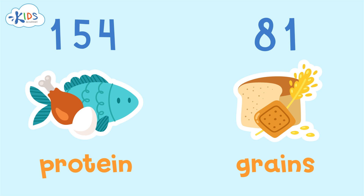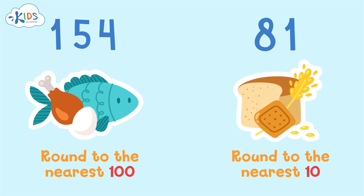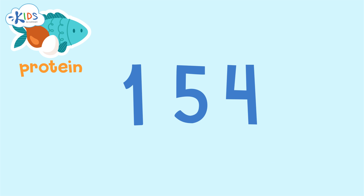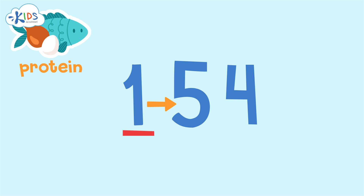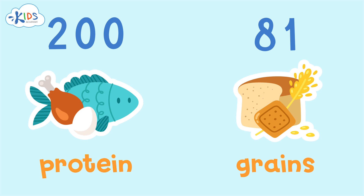We had to round the amount of protein one kid eats a day to the nearest hundred, and round the amount of grains one kid eats a day to the nearest ten. The amount of protein one kid eats a day is 154 grams. I see a five in the tens place — if it's five or higher we have to round up. The one in the hundreds place is underlined, so we round up the 100 to 200. So each kid eats about 200 grams of protein a day.